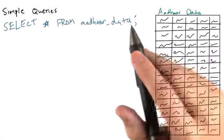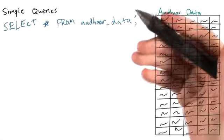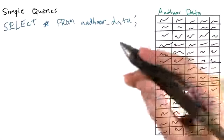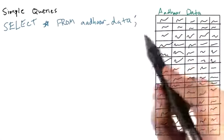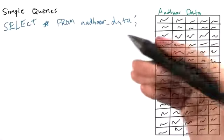All right, now let's say we have a bunch of our data in a relational database. Your next question is probably, how do we get it out? And what can we do with it? Well, let's try to learn about this using our Aadhaar data.